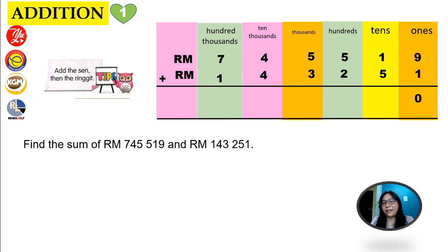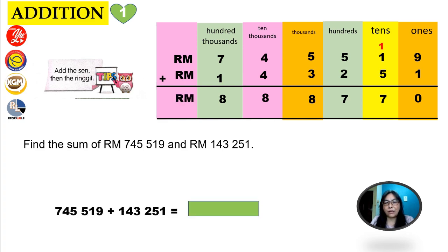9 plus 1 is 10 — we're going to put 1 on top at place value of tens. 5 plus 1 plus 1 is 7. 5 plus 2 is 7. 5 plus 3 is 8. 4 plus 4 is 8. 7 plus 1 is 8. Don't forget your units, boys and girls. The answer is RM888,770.